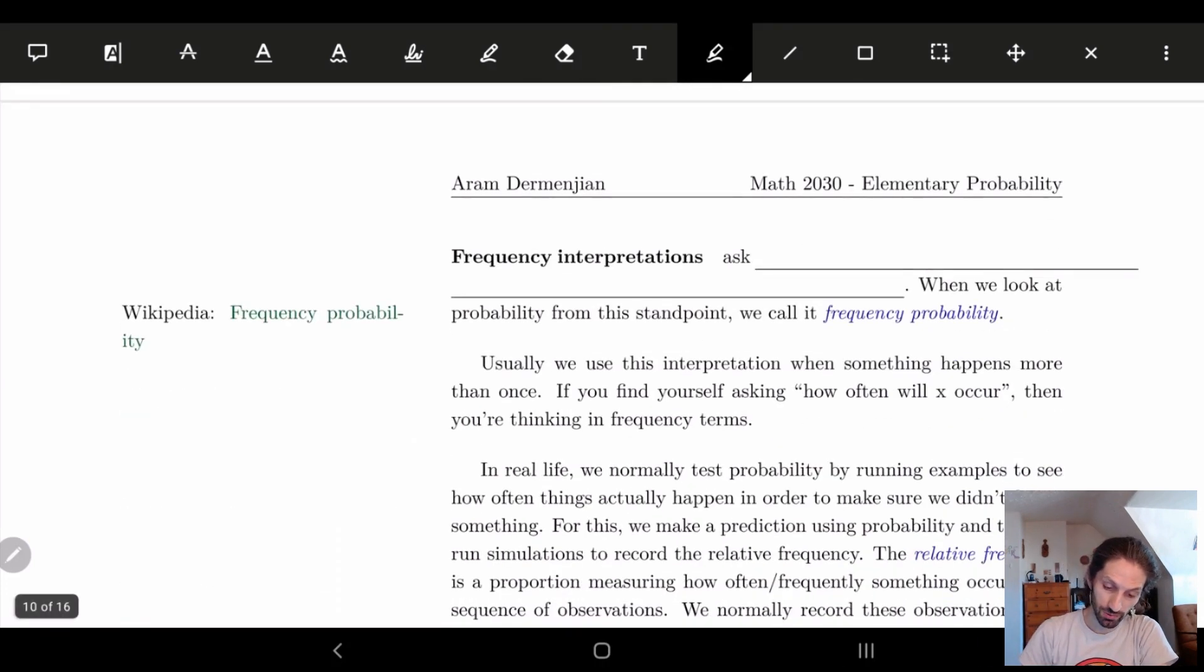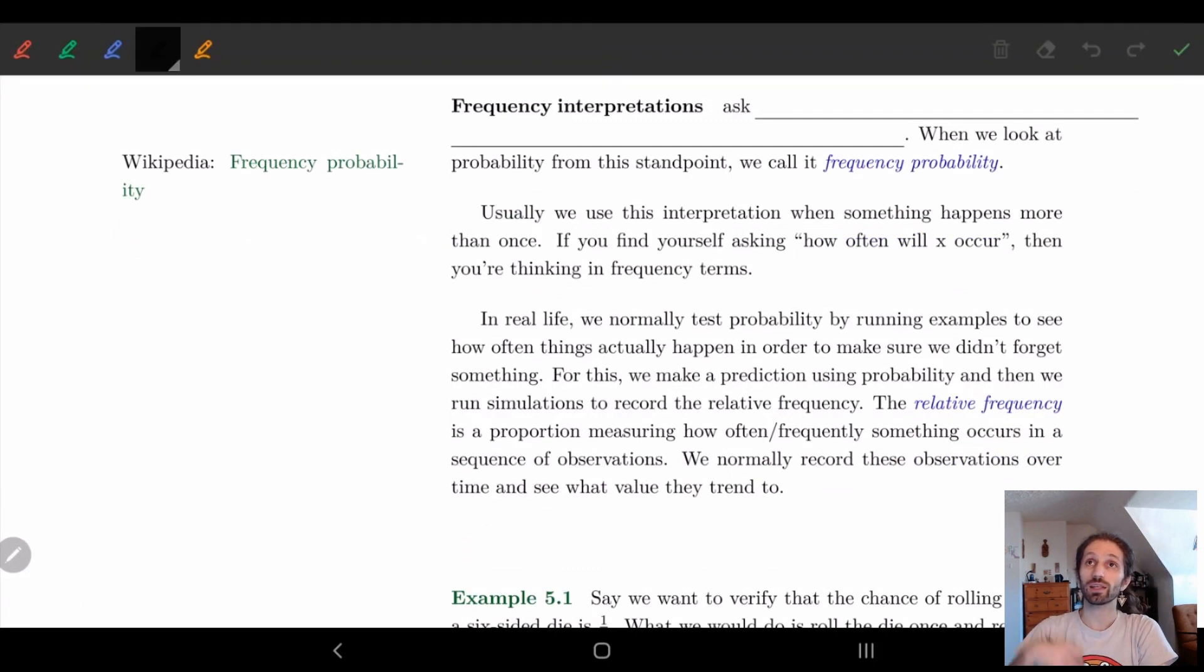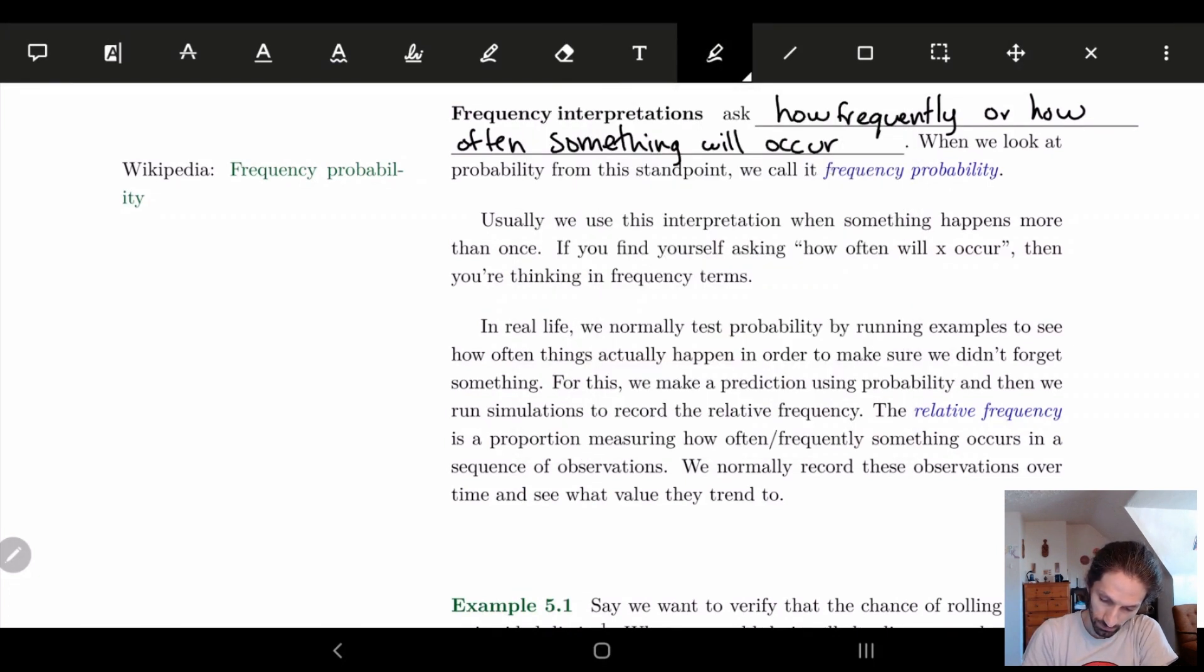So we'll start off with frequency interpretations. Basically what a frequency interpretation is when we're looking at probability and we're asking things like how frequently or how often something will occur. And so when we look at probability from this perspective we call it the frequency probability. Usually these are things that we can write down that we have statistics on. So it's like usually when we say how often will X occur. And a lot of times when we're doing this in the real world, we're going to want to actually test our assumptions to make sure things are happening.